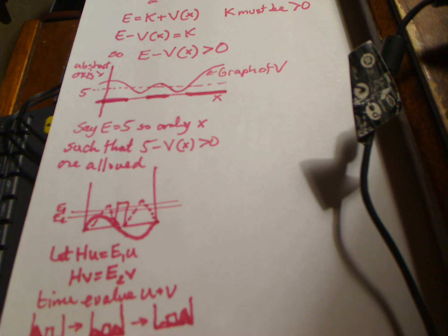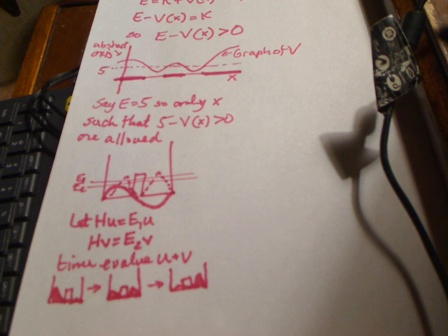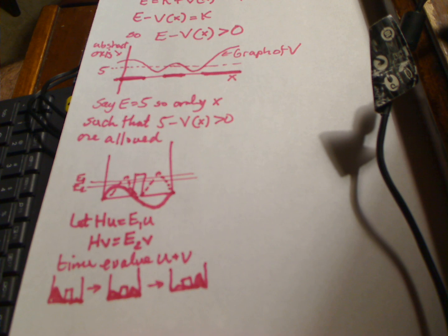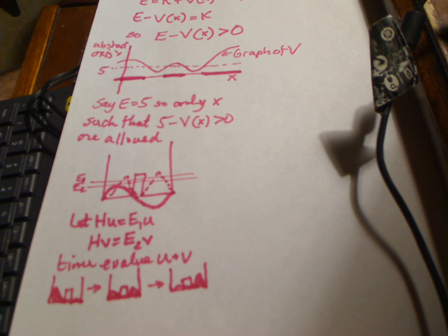The energy eigenstates are U and V, where U has energy E1 and V has energy E2. Now say you have a sum of those two states, U plus V. That superposition only has energies E1 and E2 — a certain probability of having energy E1 and a certain probability of having energy E2. The state U plus V has the same probability of having E1 as it does of having E2.